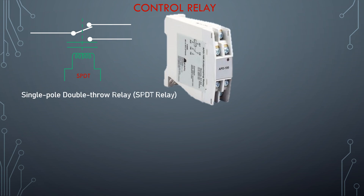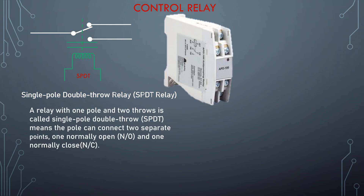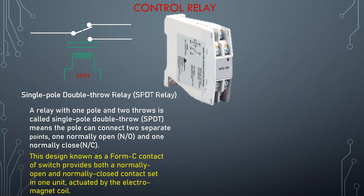Now, single pole double throw relay — SPDT relay. A relay with one pole and two throws is called single pole double throw, SPDT. It means the pole can connect to two separate points: one normally open (NO) and one normally closed (NC). This design, known as a Form C contact switch, provides both a normally open and normally closed contact set in one unit actuated by the single electromagnet coil.